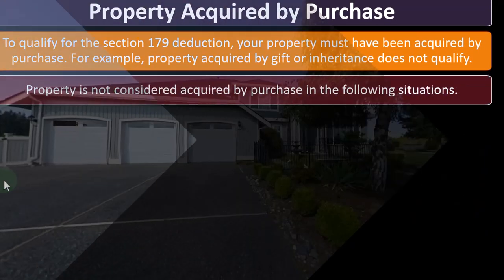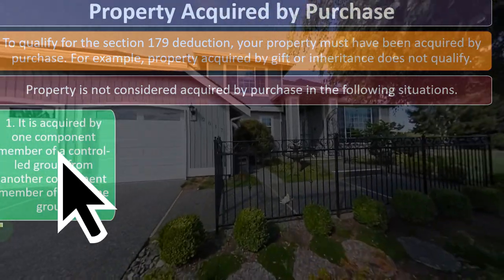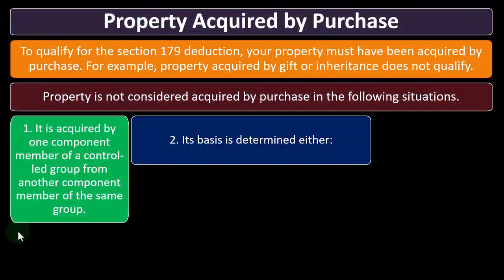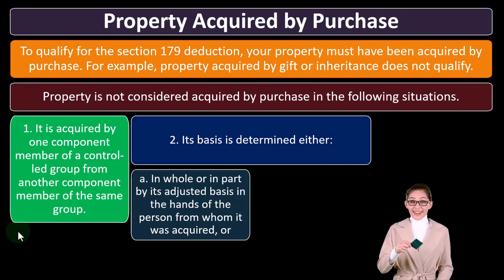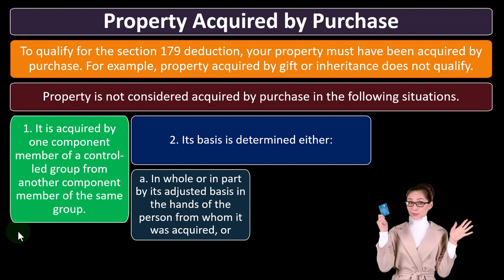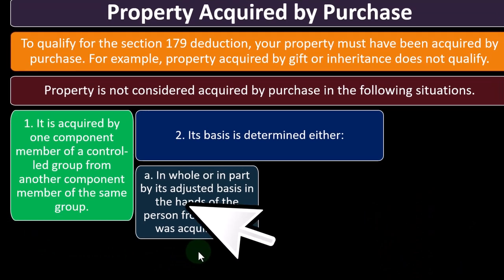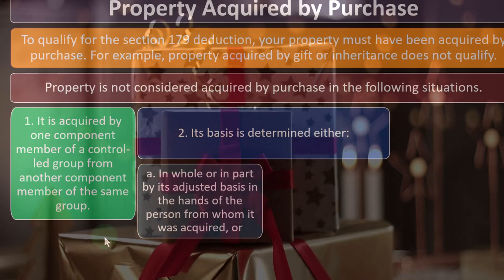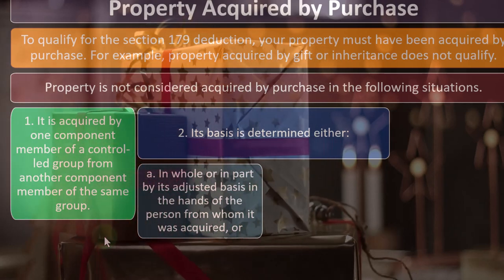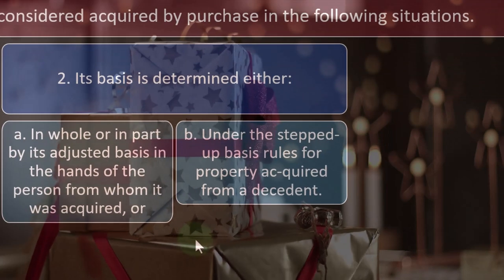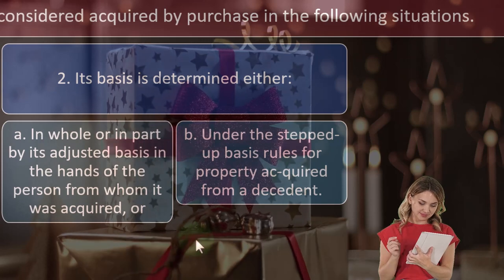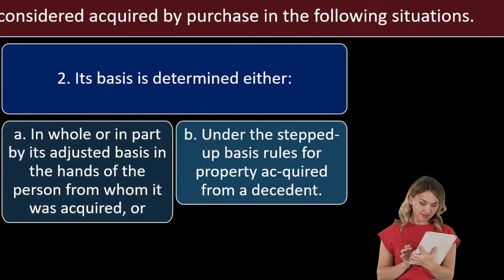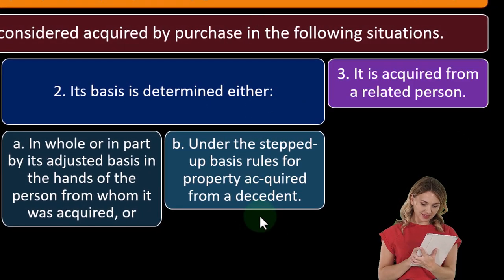Property is not considered acquired by purchase in the following situations. One: it is acquired by one component member of a controlled group from another component member of the same group. Two: its basis is determined either (A) in whole or in part by its adjusted basis in the hands of the person from whom it was acquired — which would be the case in a gift — or (B) under the stepped-up basis rules for property acquired from a decedent, which sounds like an inheritance situation where you got a stepped-up basis but didn't buy it.